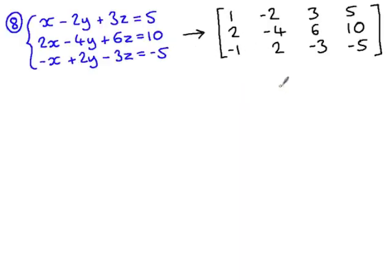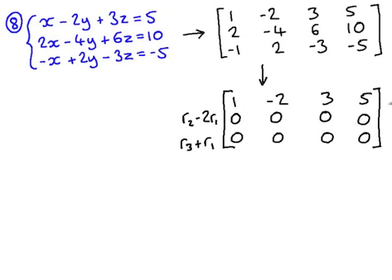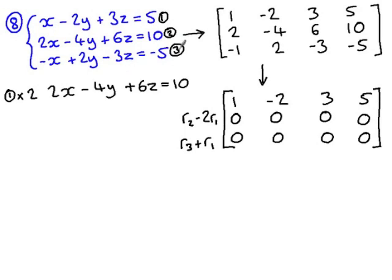Here's example number eight in matrix form. I'm going to replace row two with row two take two lots of row one, and row three with row three plus row one. You can see that I've actually eliminated two entire rows of the matrix. Looking back at the original equations, this is like taking equation one and multiplying by two, and taking equation three and multiplying by negative two. So we've actually defined the same plane three times.